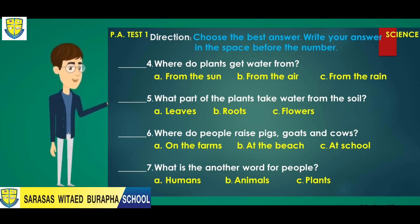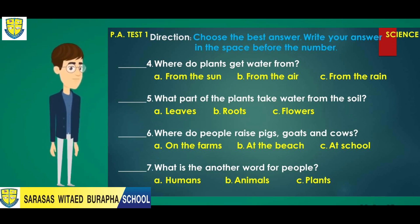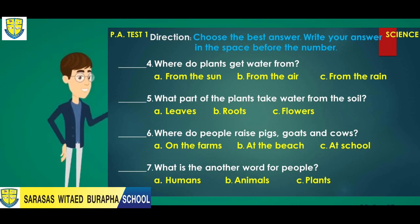Number five: What part of the plant takes water from the soil? A. Leaves. B. Roots. Or C. Flowers.